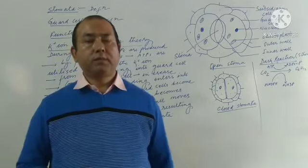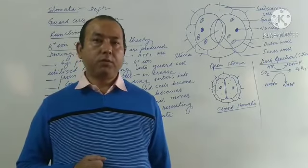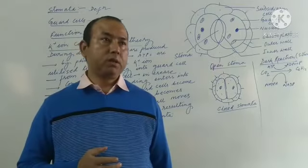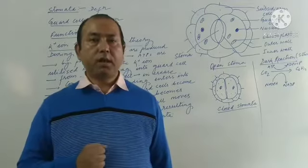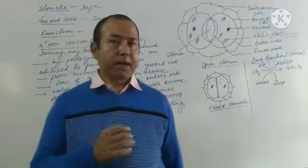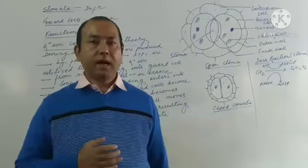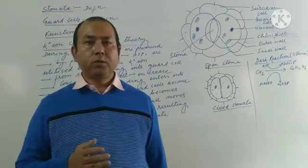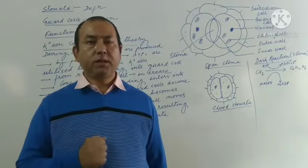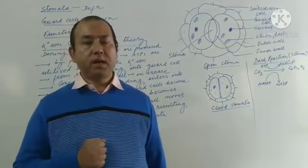Let's start today's class. We were studying about photosynthesis, and in the chapter on photosynthesis we were discussing the mechanism of photosynthesis. We have already learned that photosynthesis involves two different phases. The first phase is the light reaction and the second phase is the dark reaction.